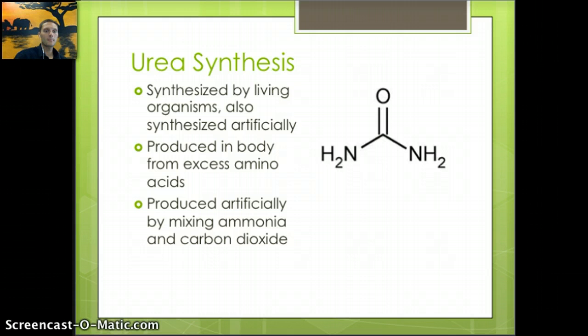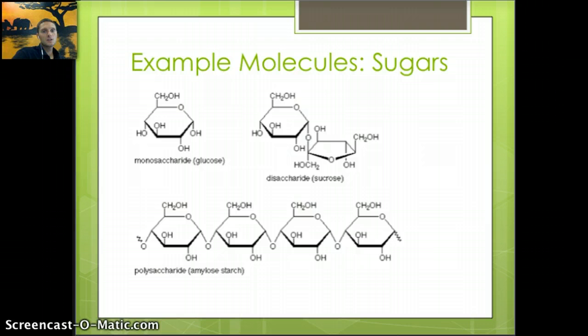These next images show examples of different molecules you'll need to identify or draw. One of the first is glucose, a monosaccharide or single sugar. This is an example of a ring. You can see these points where the lines connect represent a carbon, even without a letter shown.